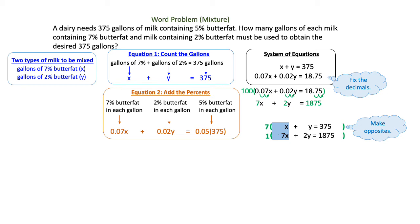And because I'm trying to create opposites, and right now I have the same signs, I'm going to drop a negative on the 7 so that I will have opposite signs when I try to add these together. I'm going to take the negative 7 and multiply it by the first equation. That's going to give me negative 7x minus 7y equals negative 2625. Multiplying 1 by the second equation is not going to change it so I'm going to write that again as 7x plus 2y equals 1875.